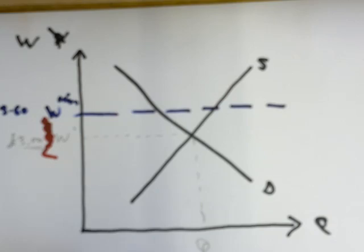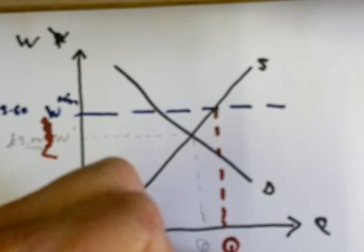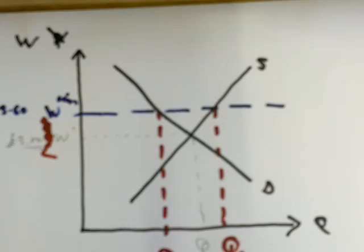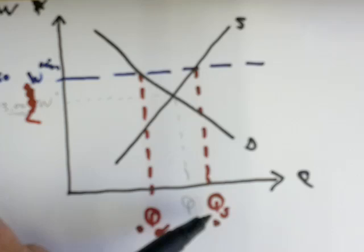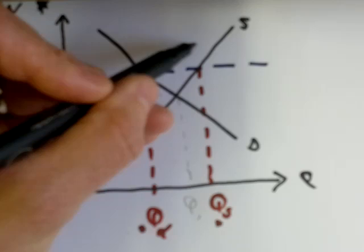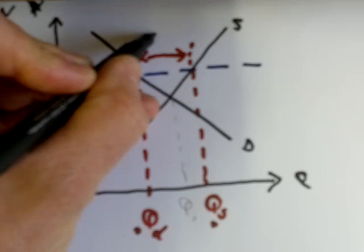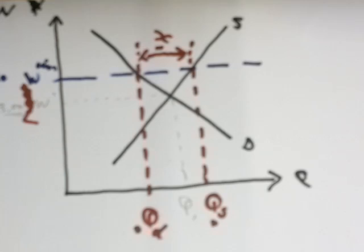The market wants to balance at W1 and Q1, but the minimum wage W-min is set above this. We have the reverse of the maximum price situation: an excess of supply over demand. QS is the quantity supplied — how many people want to work at the higher wage — and QD is the quantity demanded — how many firms want to hire labour at that higher wage. There is a mismatch: not enough firms want to hire at the higher wage level, giving us a shortfall X between quantity supplied and quantity demanded.